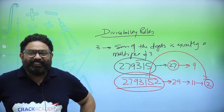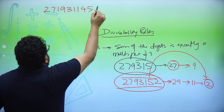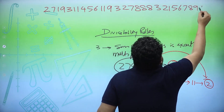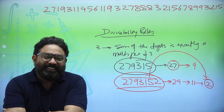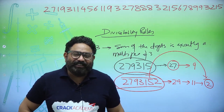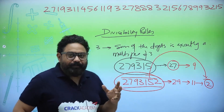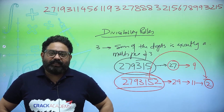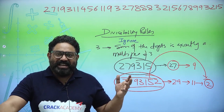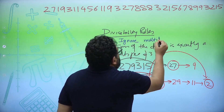But there is room for improvement. Consider this: what is the remainder when a very long number like 2719311456119327888321567899321 5 is divided by 3? Most of you would skip this question because you can't easily add up such a large number. So from today, let's change the rule — instead of adding up multiples of 3, simply ignore them.